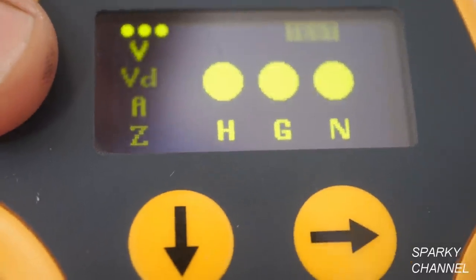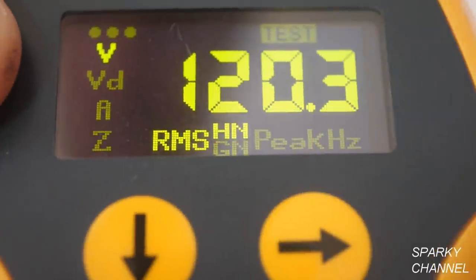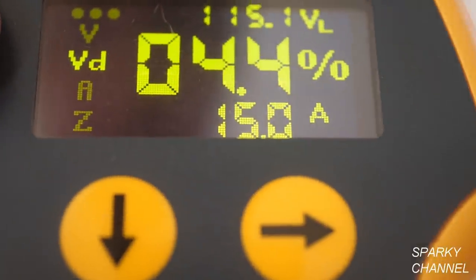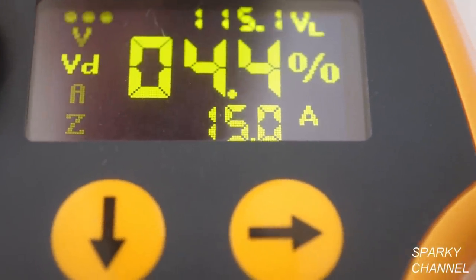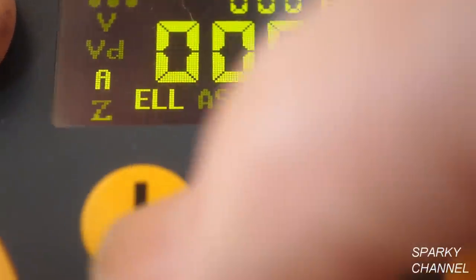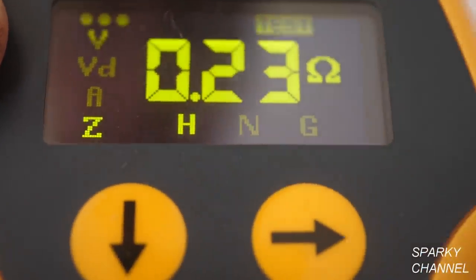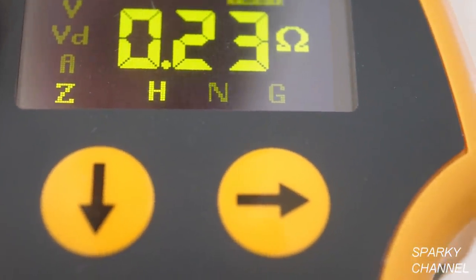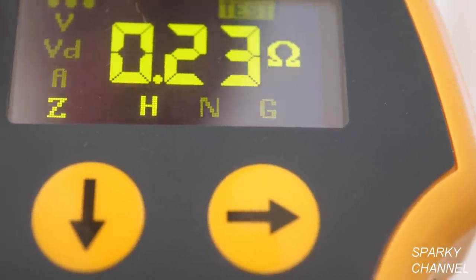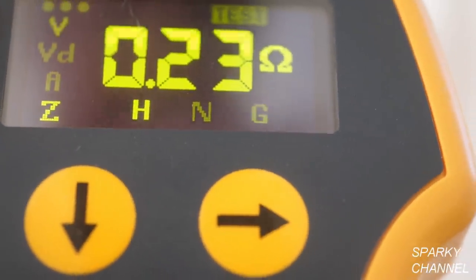And we have all three lights lighting up. I press the down arrow. We have 120.4 volts. Voltage drop is 4.4% at 15 amps load, zero amps. And we have 0.23 ohms impedance. So these are very excellent readings.